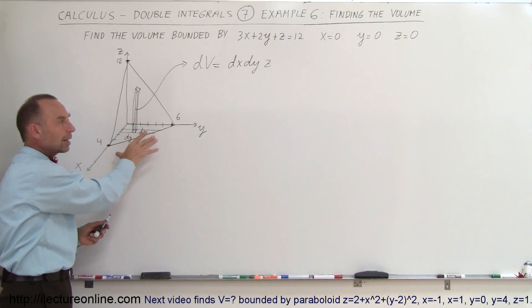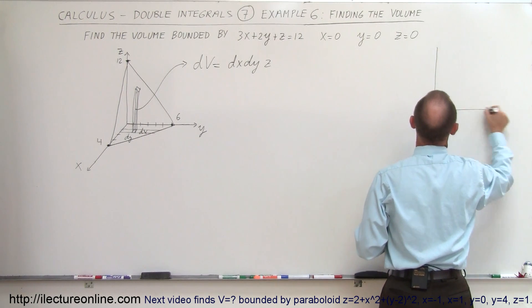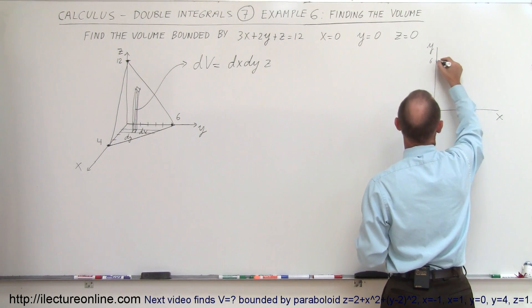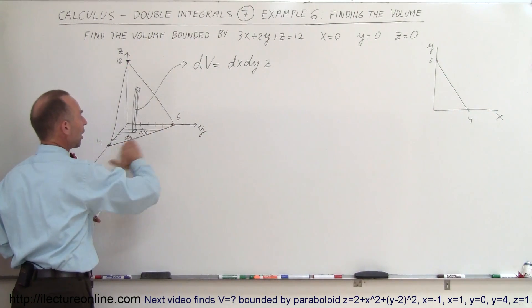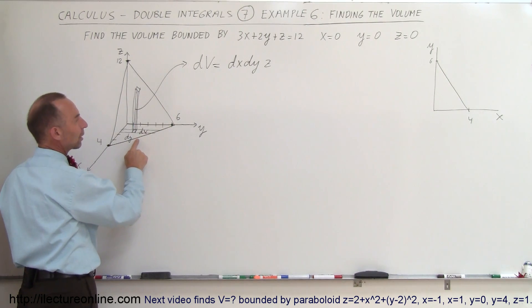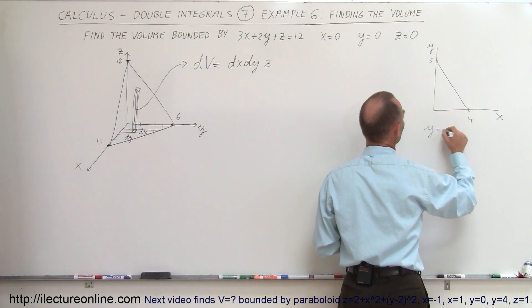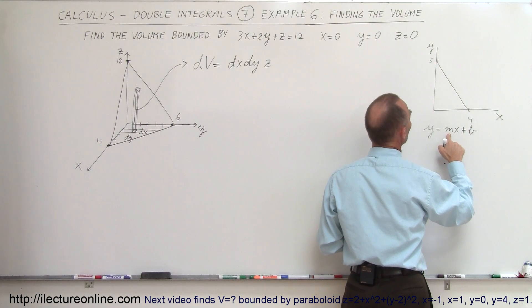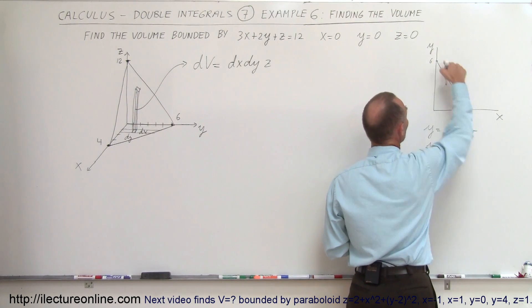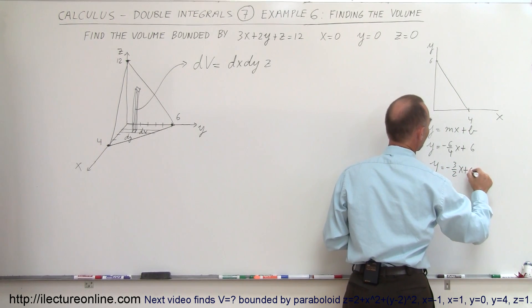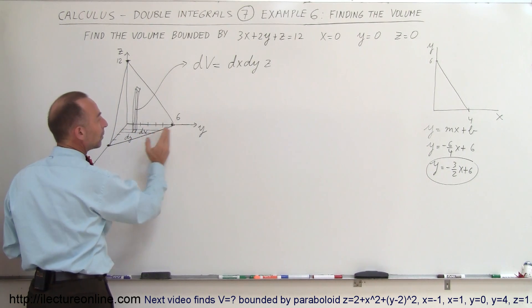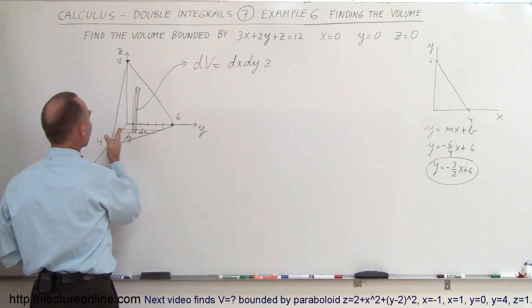Notice this is the xy plane. Let me redraw that xy plane — there's my y-axis, my x-axis. Notice it crosses the y-axis at 6 and the x-axis at 4. This line, where the plane crosses through the xy plane, is a line of intersection, and we can find its equation using y equals mx plus b. The slope is the rise over the run: a drop of 6 and a run of 4, so y equals minus 6 over 4 times x plus 6, which simplifies to y equals minus 3 over 2 times x plus 6. That is the right (upper) limit for y.